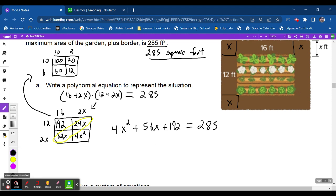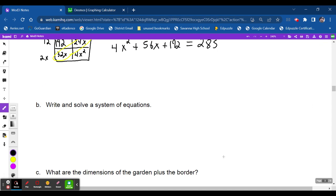So before we go on, let's ask what's the next question. So what I can actually do is I can actually rewrite this. And normally I'm going to put y is equal to 4x squared plus 56x plus 192. And I'll say, I have this y is equal to 285.